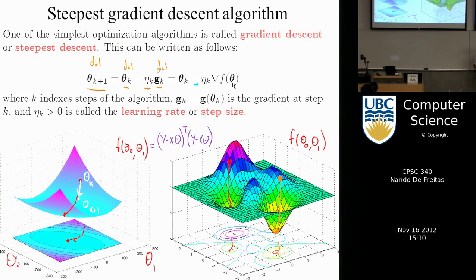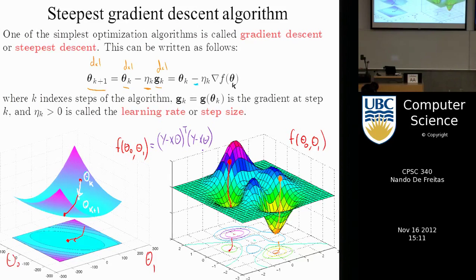If I have some objective function f(theta), I can just take e^{-f(theta)} and that essentially gives me a likelihood. So there's a nice duality: the cost function is just the negative log likelihood.